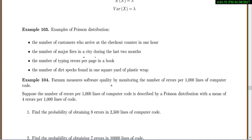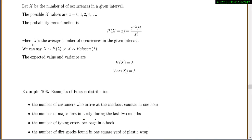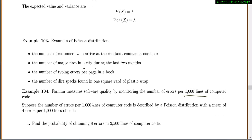So Farnham measures software quality by monitoring the number of errors per 1,000 lines of computer code. So that's kind of our interval, and that cues you on when we're doing Poisson. Suppose the number of errors per 1,000 lines of computer code is described by a Poisson distribution with a mean of four errors per 1,000 lines of code. So this is important that we have four errors per 1,000 lines.